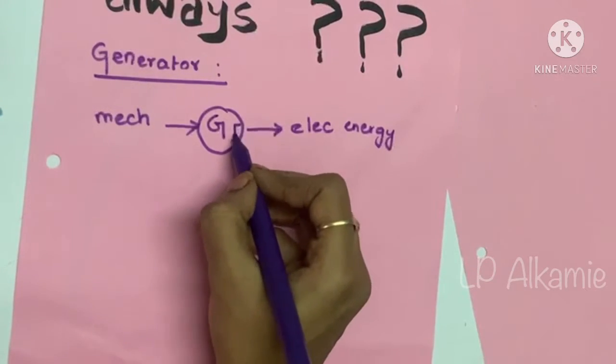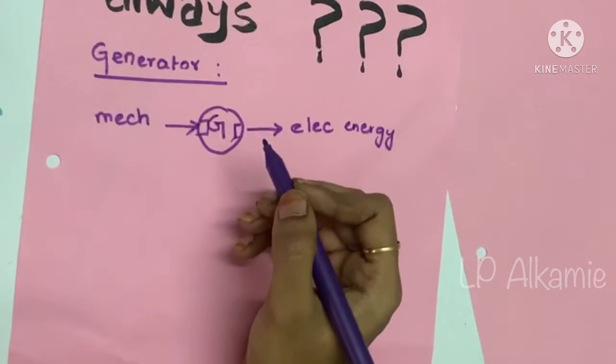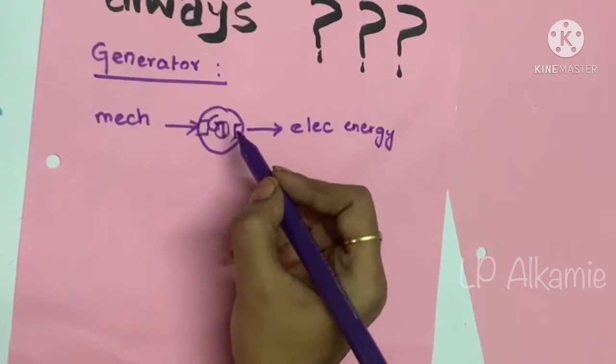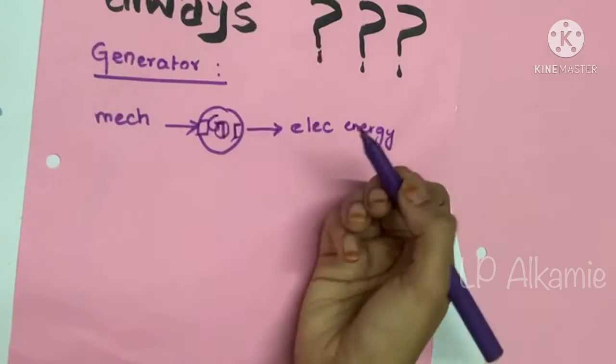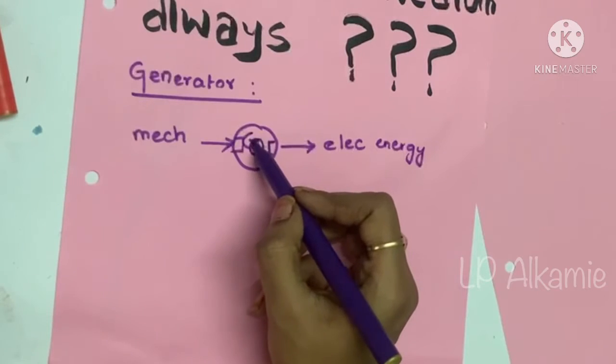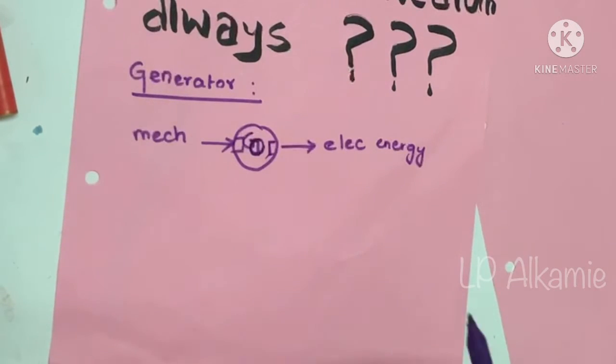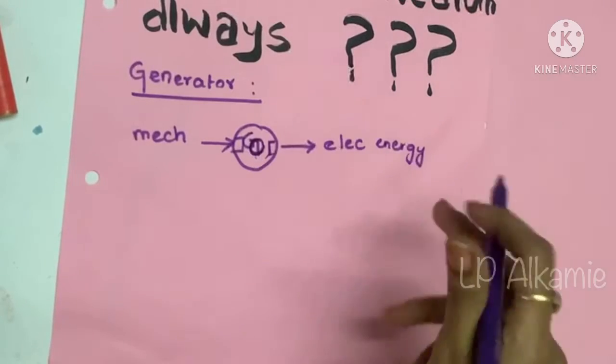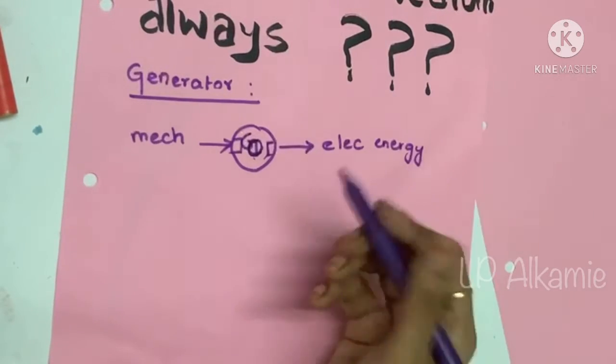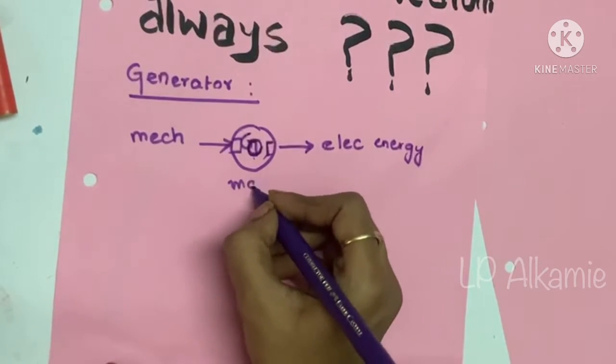There are two magnets inside the generator. A rotor is being rotated inside. The conductors are being cut in a magnetic field and the EMF is being induced in these conductors which is utilized at the output. So here the medium is magnetic.